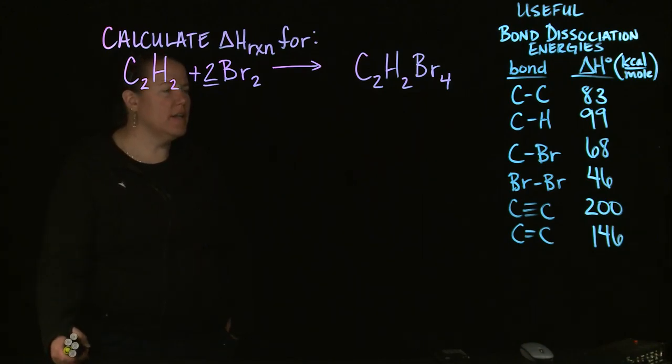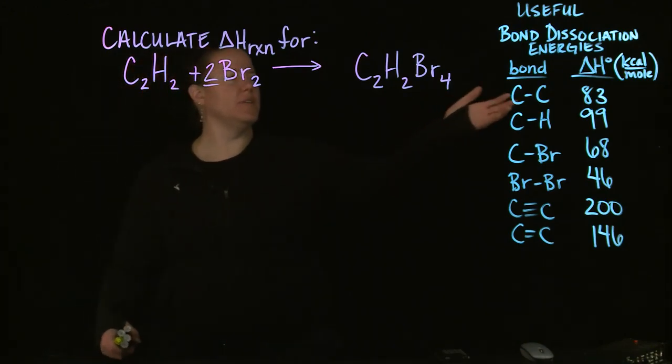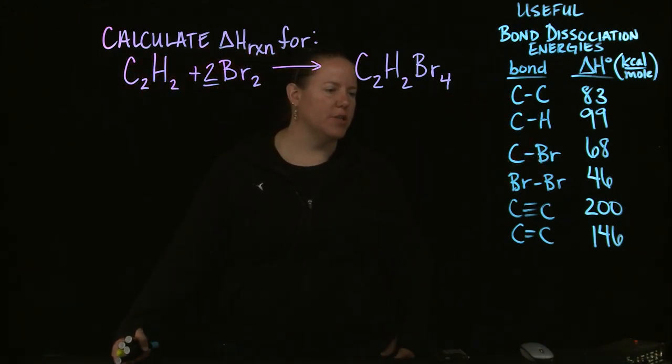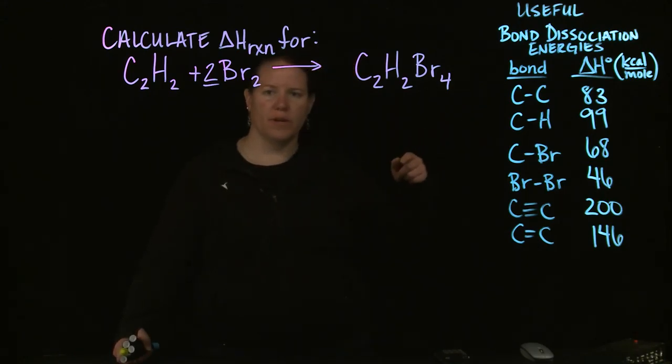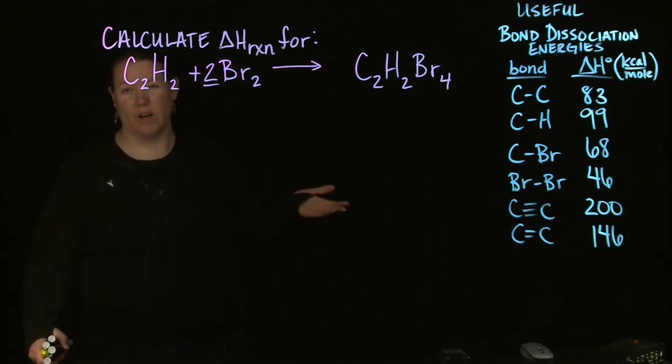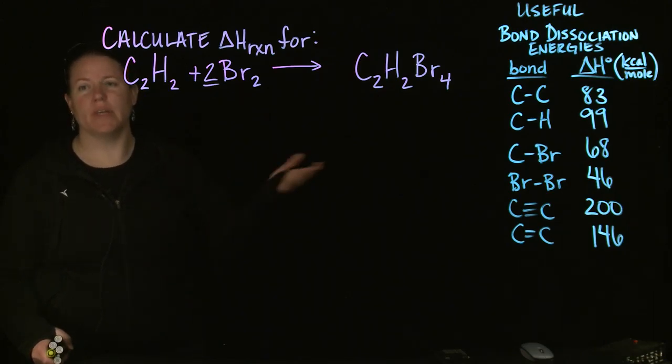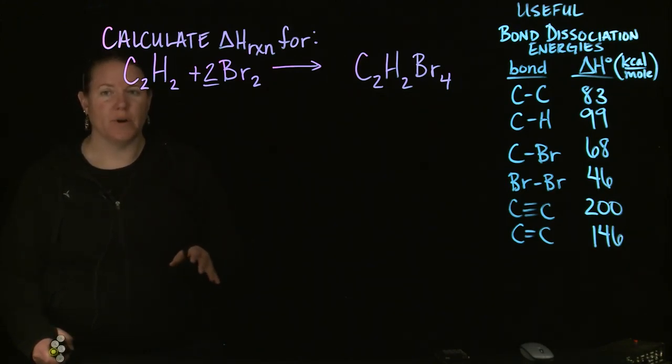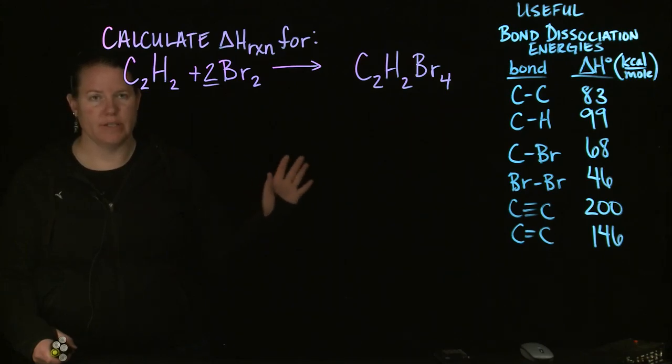We have a list here of some possibly useful bond dissociation energies. These are in kilocalories per mole because that's more common in organic chemistry. But we can convert to kilojoules per mole. I'll show you how to do that in the end. If you are in Gen Chem 1, your test will have kilojoules per mole. So realize they will be slightly different from these, but that's okay.